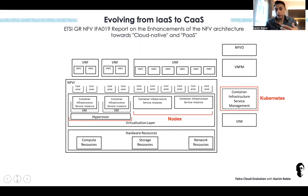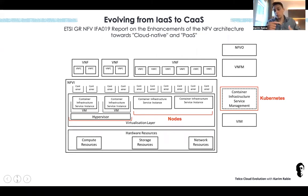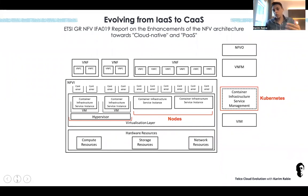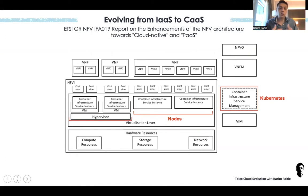In 3GPP and ETSI NFV you have stage one, stage two — where you get flows and information models — and stage three where you get exact APIs. But a report is a very early stage. In that report, ETSI NFV suggested a new functional block called CISM — Container Infrastructure Service Management — which by definition maps to Kubernetes-like solutions. They also defined CISI — Container Infrastructure Service Instance — which maps to worker nodes, and noted that containers would run either on bare metal or on existing VMs.